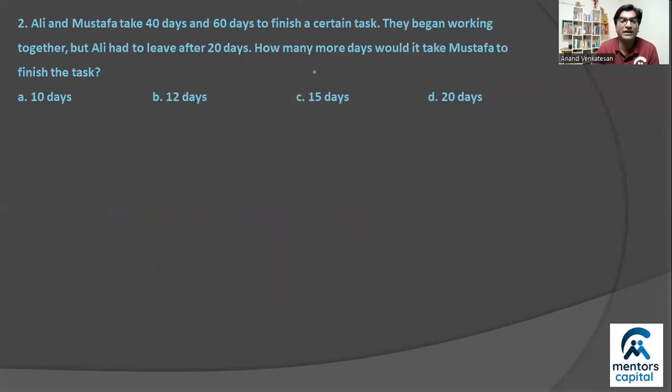Question number two: Ali and Mustafa take 40 days and 60 days. So the first step is work assumed. 40 and 60 ka LCM is very easy, that's 120. And now if I use work is equal to rate into time formula, then we have work we assumed and we have time in the problem. So you will get two individual rates. So Ali ka rate A should be equal to 120 by time taken by him, that's 40, so three units every day.